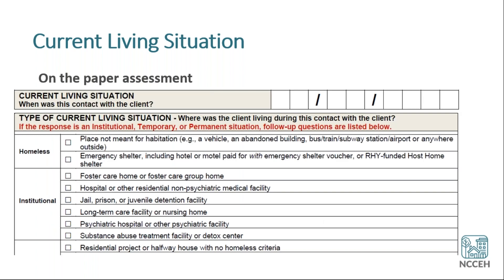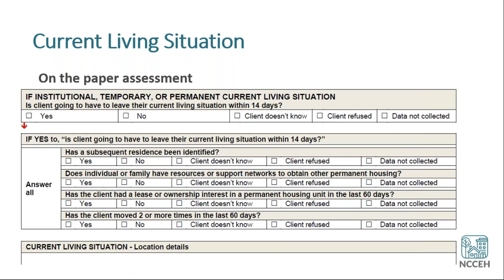Let's take a look at the paper assessment. First we've got a date — when was this contact or interaction with the client? Then, where was the client living during this contact? You'll see a very familiar list divided into homeless, institutional, and temporary or permanent responses — this is almost identical to our prior living situation list. Again, this is about the situation the client is staying in, not a geographic location. After identifying that situation, if the client was staying in an institutional, temporary, or permanent living situation, there are some follow-up questions.